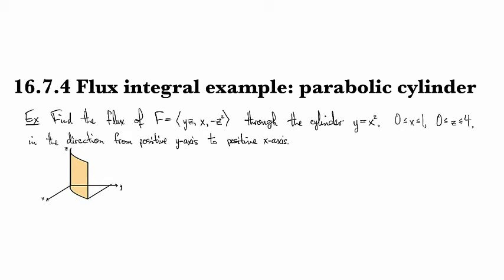All right, so in this example, we're going to compute the flux of this vector field, yzx minus z squared, through the parabolic cylinder y equals x squared, where x ranges between 0 and 1 and z ranges between 0 and 4.